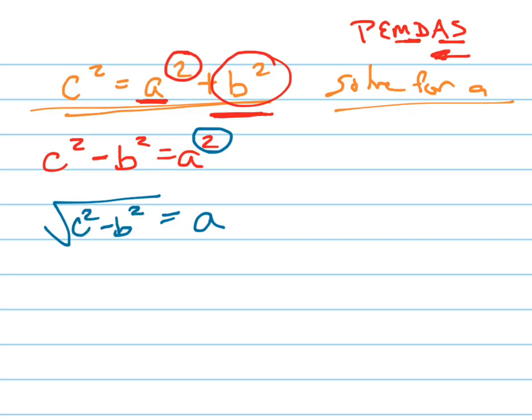That's how I get rid of squared. I take the square root of both sides. And whenever you take the square root, you need to put a plus or minus sign in front of it. So that would be the solution: A equals plus or minus the square root of C squared minus B squared.